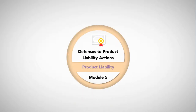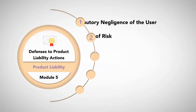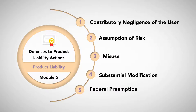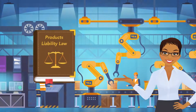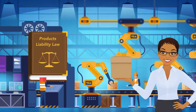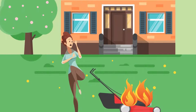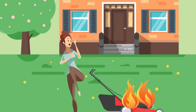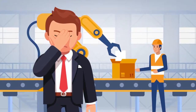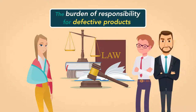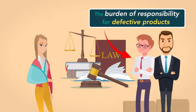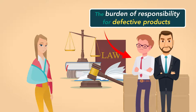Module 5 – Defenses to Product Liability Actions. Under product liability law, product manufacturers and sellers are expected to distribute safe and reliable products. When they fail to do so, and the users of these products are harmed, parties in the chain of distribution can be held liable for damages. The burden of responsibility for defective products is on manufacturers and sellers who distribute the products, rather than on those who purchase them.